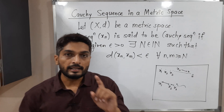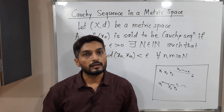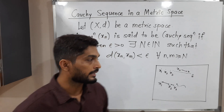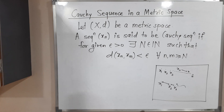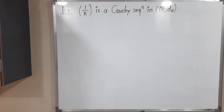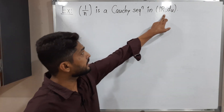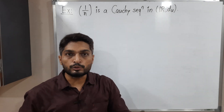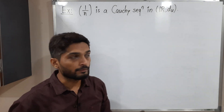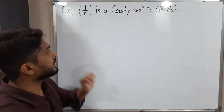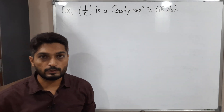Let us discuss one example so you can understand this concept. What is the sequence we have? It is 1/n in the metric space (R, d_u), where d_u means the usual distance. We have to prove that 1/n is a Cauchy sequence. So let me mention: our sequence is x_n = 1/n, and using the epsilon definition we are going to prove it is a Cauchy sequence.